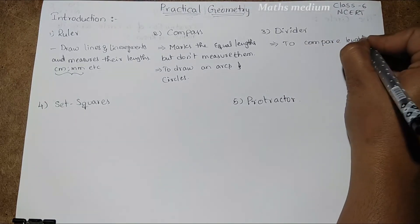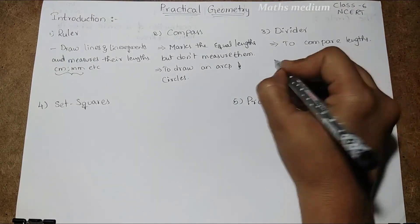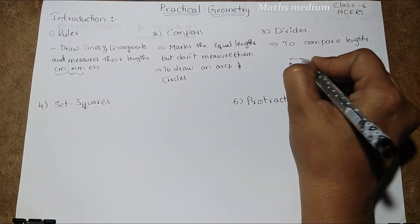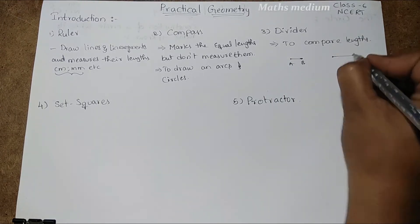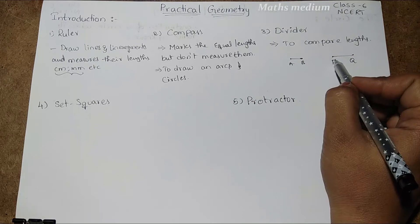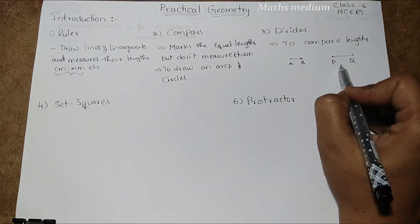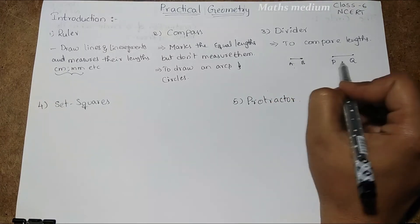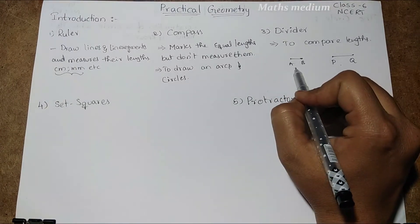Next, coming to the divider — it is used to compare lengths. If you take any two line segments, say AB and PQ, by using the divider we can measure AB and PQ and compare which line is greater and which one is smaller.